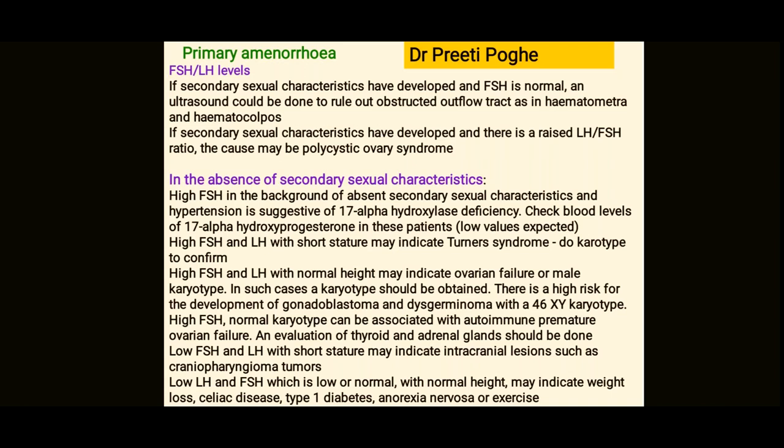An important test for primary amenorrhea is LH and FSH. If secondary sexual characters have developed and FSH is normal, an ultrasound can rule out obstruction like hematometra or hematocolpos. Normal FSH means the hypothalamus and pituitary tract are functioning normally. If secondary sexual characters are developed but there is a raised LH:FSH ratio, it can suggest PCOS.